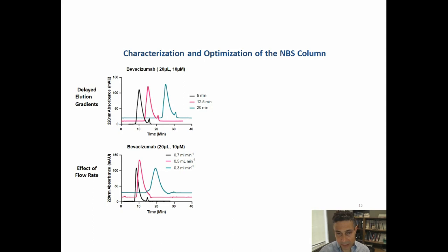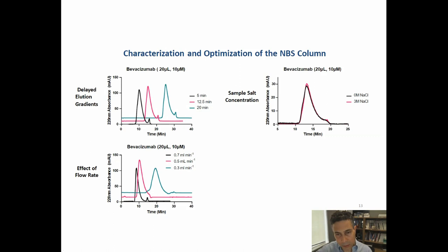Flow rate also had an effect. As we slowed down the flow rate, elution of the antibody was delayed. At the fastest rate — 0.7 mL per minute — the antibody eluted around nine minutes. As we slowed the flow rate, the antibody was retarded and eluted later, and the peaks also broadened, as expected.